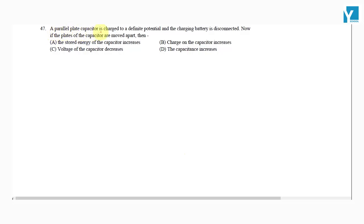A parallel plate capacitor is charged to a definite potential and the charging battery is disconnected. Now if the plates of the capacitor are moved apart, then what happens?